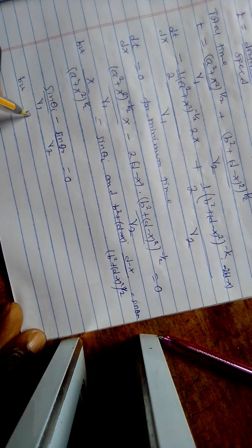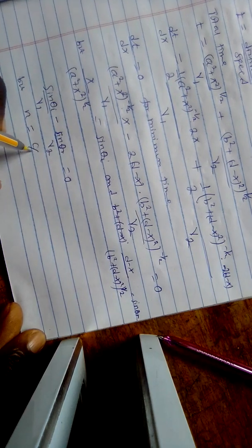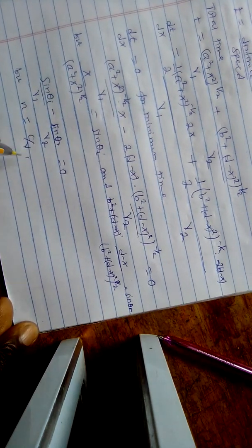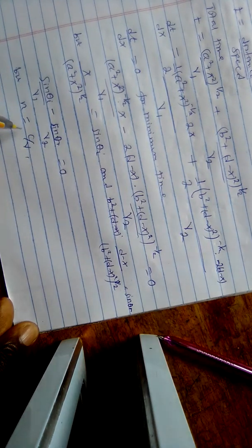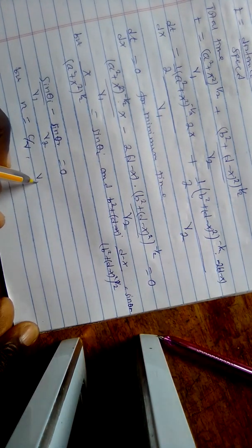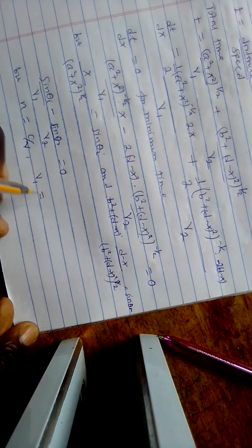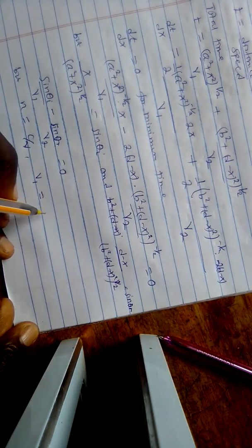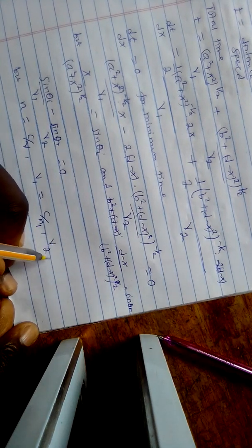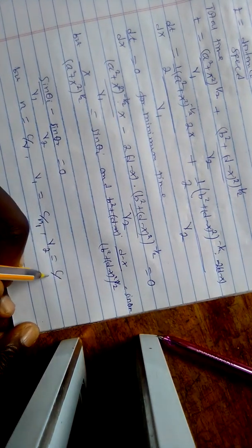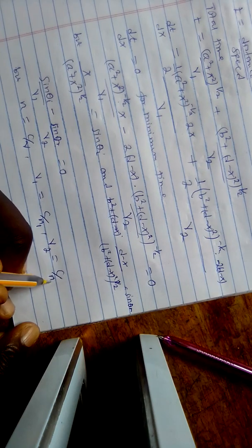But refractive index equals C over V. So implying that V1 is equal to C over n1, and V2 is equal to C over n2.